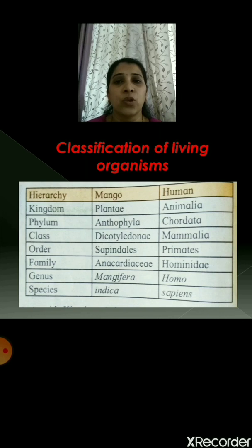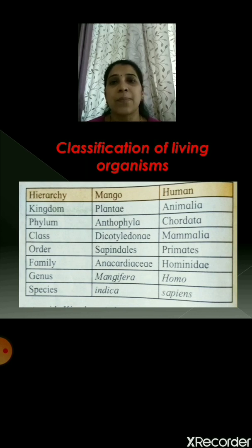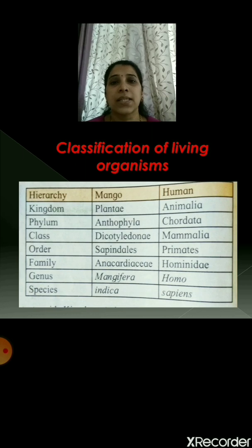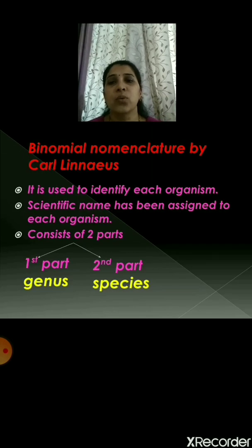Now let us move to the hierarchy of kingdom Animalia, where they have taken the example of human. Humans belong to kingdom Animalia, phylum Chordata, class Mammalia, order Primates, family Hominidae, genus Homo, and species sapiens.